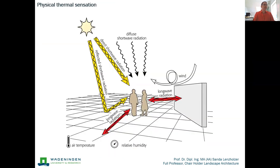Air temperature is one of the factors that has a big influence on how we experience temperature, and so does relative humidity. But what is very important outdoors is whether we are exposed to shortwave radiation from the sun. This can also be reflected by materials in the city — for instance, when we have bright materials, you can easily feel it when you walk over a surface of white gravel in the sun, where solar radiation is hitting you from underneath as well.